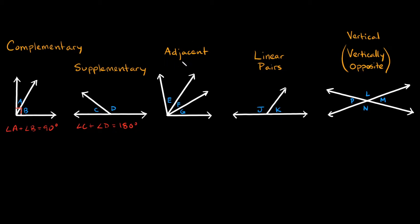Now let's go to adjacent angles. Adjacent angles are just angles that share a common vertex and a common side — basically angles that are next to each other. So here, angle E and angle F are adjacent angles because they share this common vertex and this common side. We can also say that angle F and angle G are adjacent angles because they share this vertex and this common side. But angle E and angle G are not adjacent angles because yes, they share a common vertex, but they don't have a side in common.